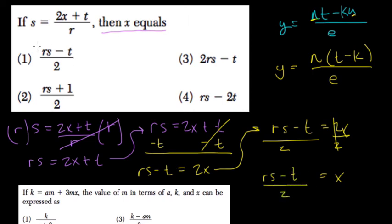Let's see if they have that. There it is. rs minus t over 2. Let's keep going.